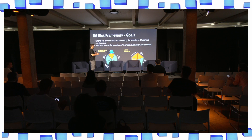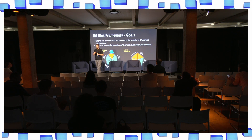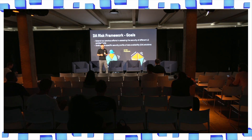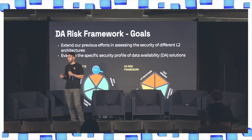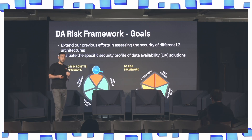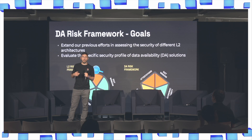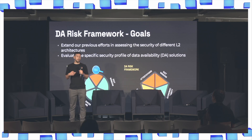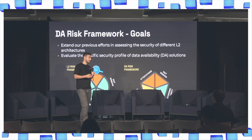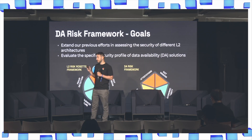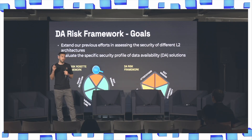If you're familiar with L2Beat, you're familiar with the L2RISK Rosette, made up of five categories or five slices. One of the slices is data availability. So far we have marked green for layer 2s using Ethereum as a data availability solution, but we have lacked granularity on the risks and different characteristics of other data availability layers. This DA-RISK framework aims at expanding our previous efforts in assessing the security of different L2 architectures, and we aim to evaluate the specific security profiles of data availability providers.